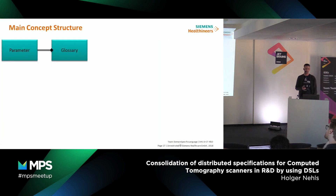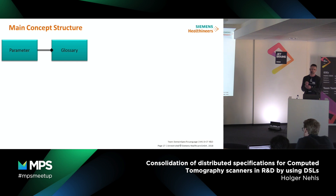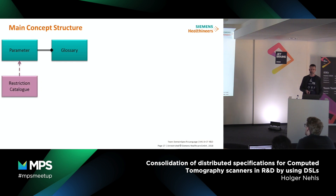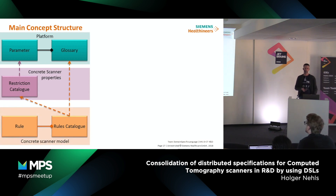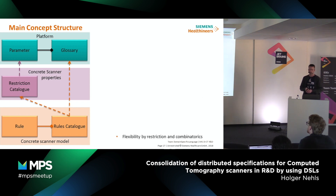Some words about our language design. On the highest level we have a global glossary, which is where the user can define parameters with semantics, data types, and so on. These parameters can be restricted to cover the special scanner properties, and we have the final rules catalogues where the behavior of the concrete scanner is defined and instantiated. So we have the platform, the concrete scanner properties, and the concrete scanner model. We address the needed flexibility by restriction and combinatorics.